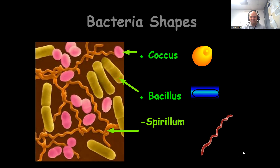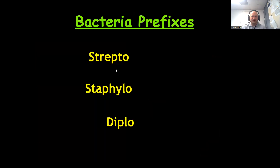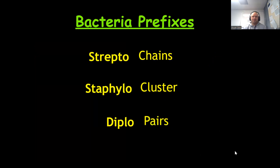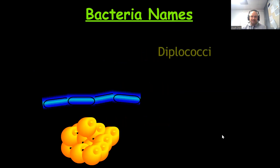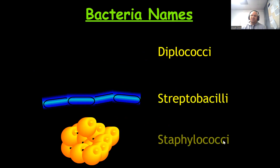The prefixes we put in front of those shapes tell us how the bacteria are arranged. Strepto means those bacteria are hooking together in chains. Staphylo means they're clustered up. Diplo means they come in pairs. So streptobacilli would be a chain of rod-shaped bacteria, and staphylococci would be a cluster of spherical bacteria. That's a little bit about bacteria naming.